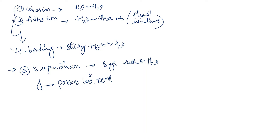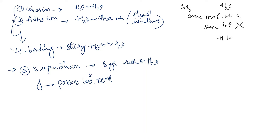Another example is methane. Methane is CH4 and water is H2O. Both methane and water have approximately the same molecular weight, and hence they should have similar boiling points — but they do not. This difference in boiling point is due to hydrogen bonds. If there are more hydrogen bonds, the boiling point will definitely increase. Hence the boiling point of water is 100°C and the boiling point of methane is minus 161.6°C.